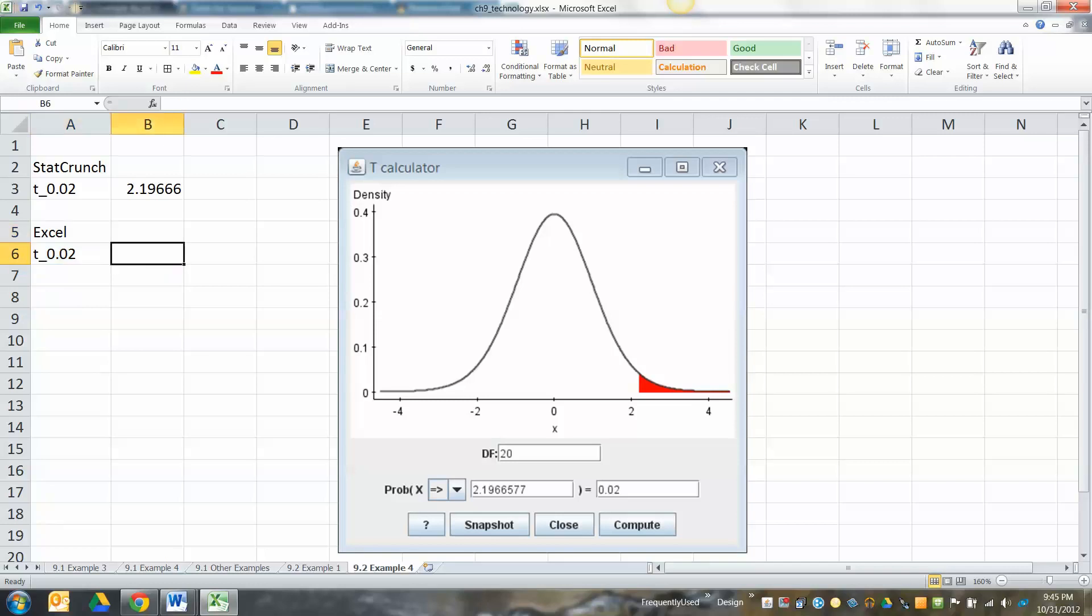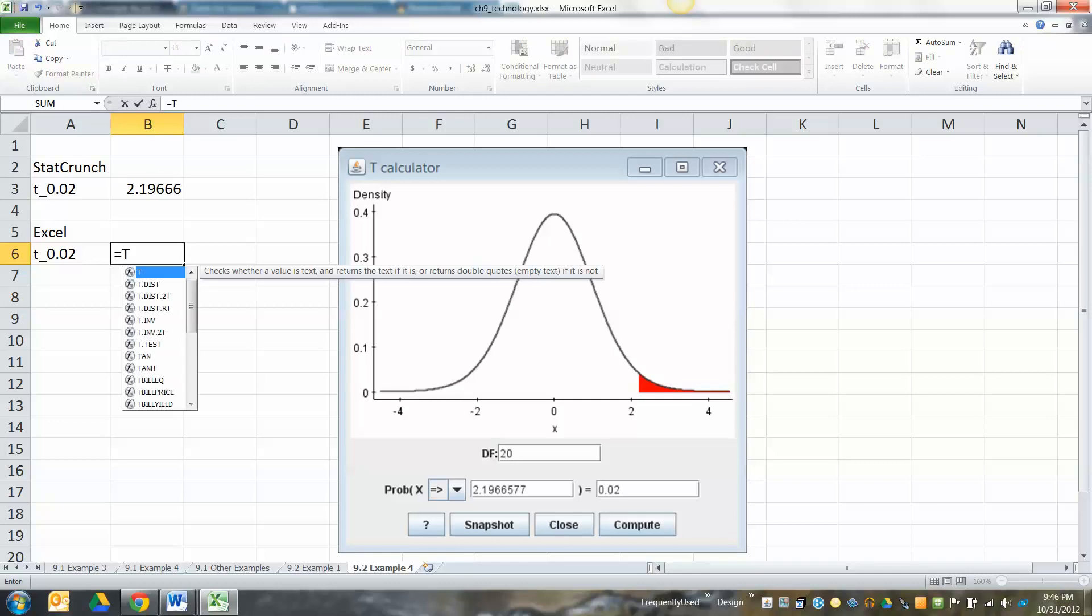Now how can we find that with Excel? The thing about Excel is that Excel always does left area by default. If you type t inverse or T.INV, which is the one I prefer - that's the newer one - if you look at probability, it's the left tail probability that they're talking about. Well, we don't have the left tail, we have the right tail.